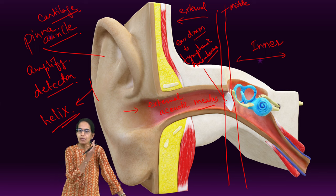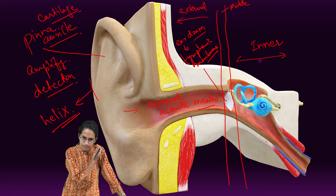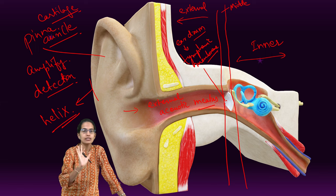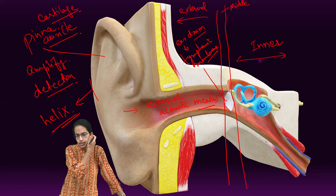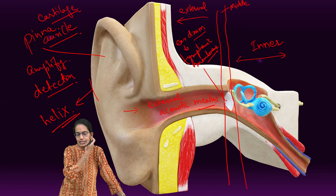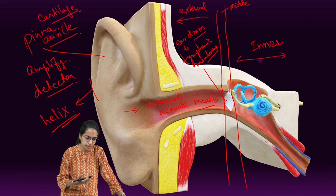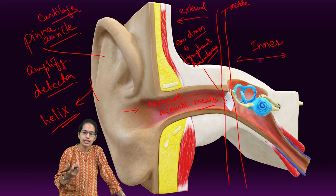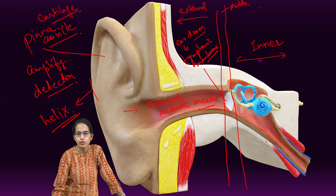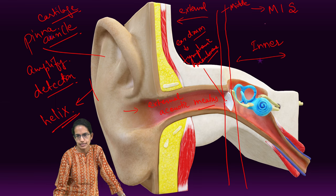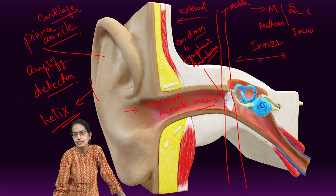This tympanic membrane is also called, in very simple language, the eardrum. It is semi-transparent and oval in structure, and very thin. The signal from the external ear is taken into the middle ear through the tympanic membrane. In the middle ear, there are three important bones known as MIS: malleus, incus, and stapes.